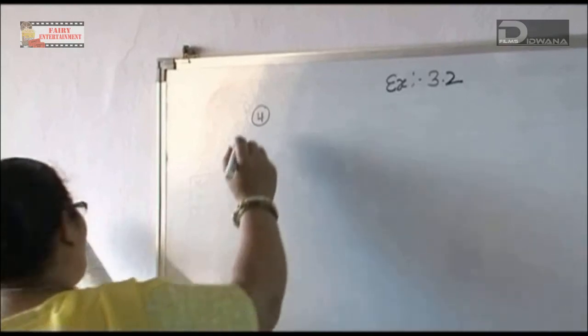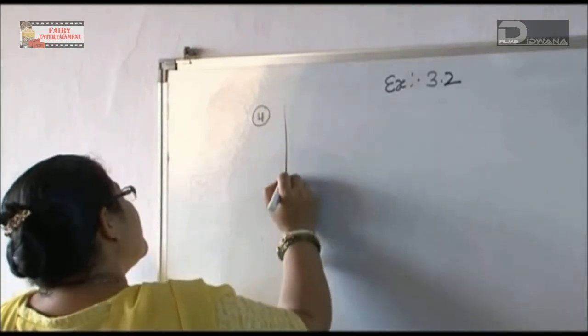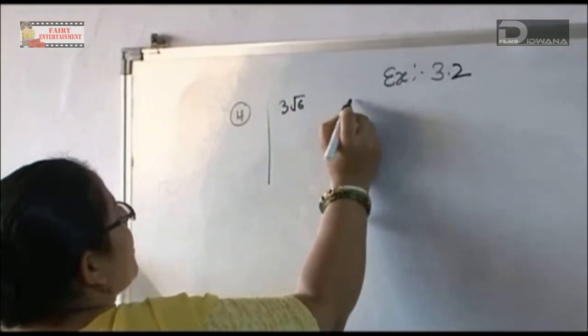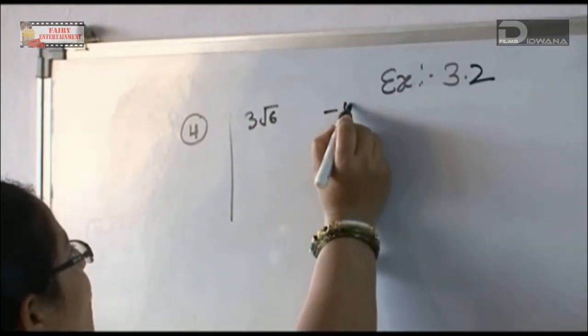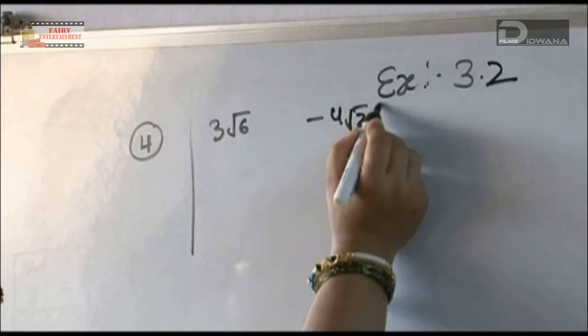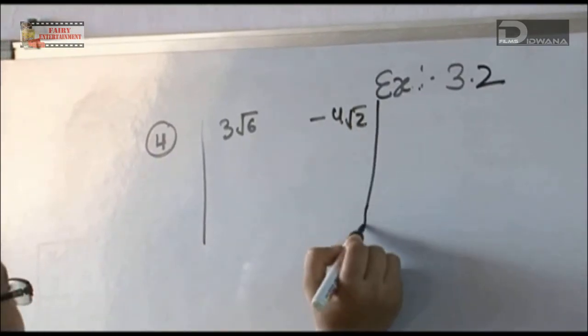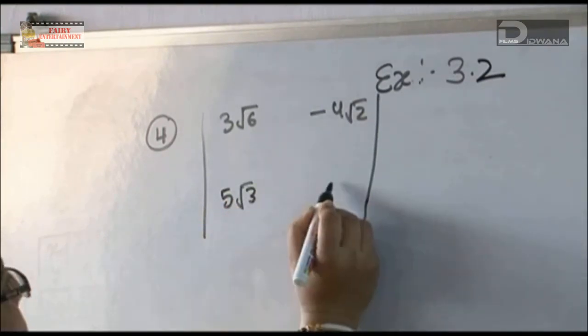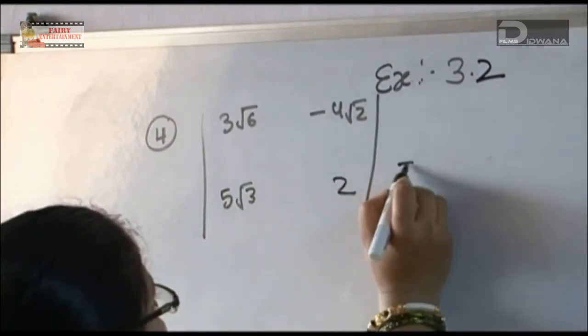We start question 4 of 3.2. The question is 3√6 - 4√2 and 5√3, 2. We will do the cross multiplication.